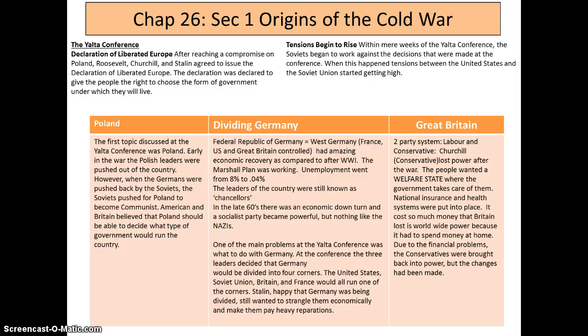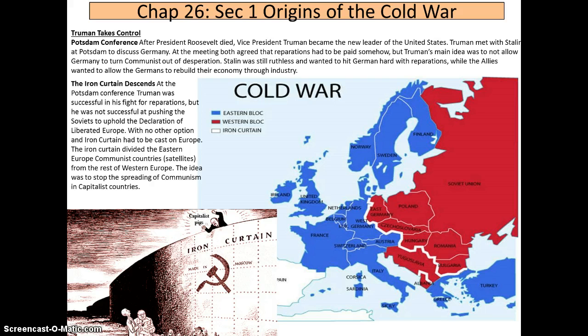One of the main problems at the Yalta Conference was what to do with Germany. The three leaders decided Germany would be divided into four parts — United States, Soviet Union, Great Britain, and France. Stalin, happy that Germany was being divided, still wanted to strangle them economically. Berlin, located inside East Germany, was also a city divided into four parts.